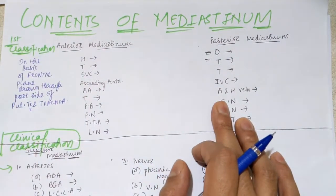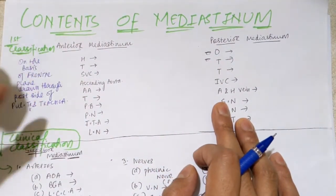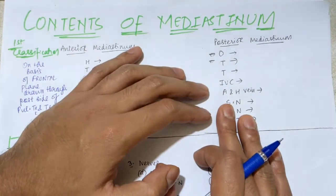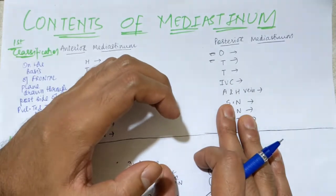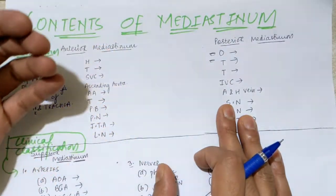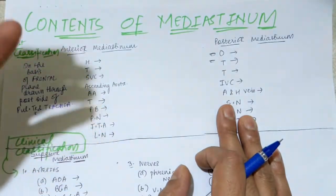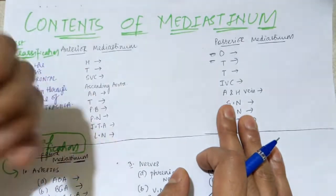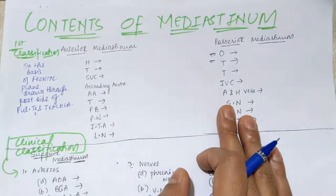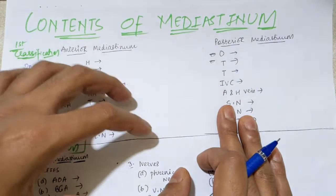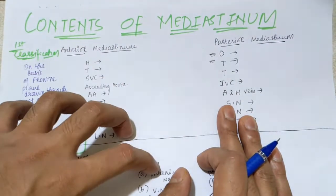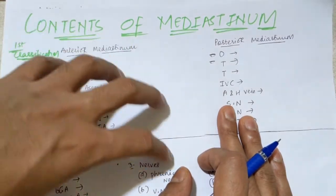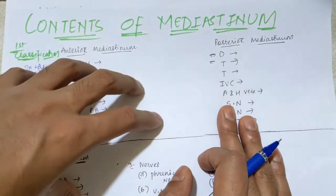Hello everyone, this is Vesh here. In this video, we are in the section of contents of the mediastinum. In the previous video, we discussed the divisions of the mediastinum and its topography. So now it is clear what your anterior mediastinum is, what is your posterior, and further there is one more classification in which the mediastinum is divided into superior and inferior, where inferior has anterior, middle, and posterior mediastinum.